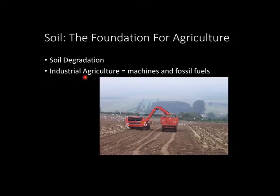Now let's look at industrial agriculture — that's just modern agriculture and farming. Think machines, fossil fuel emissions, and big fields of corn. An important term to know is monoculture, which is those big fields of corn. That's basically when a farm grows one crop, such as corn, that has a massive yield and the largest return. But monoculture is a farming technique that does degrade soil.